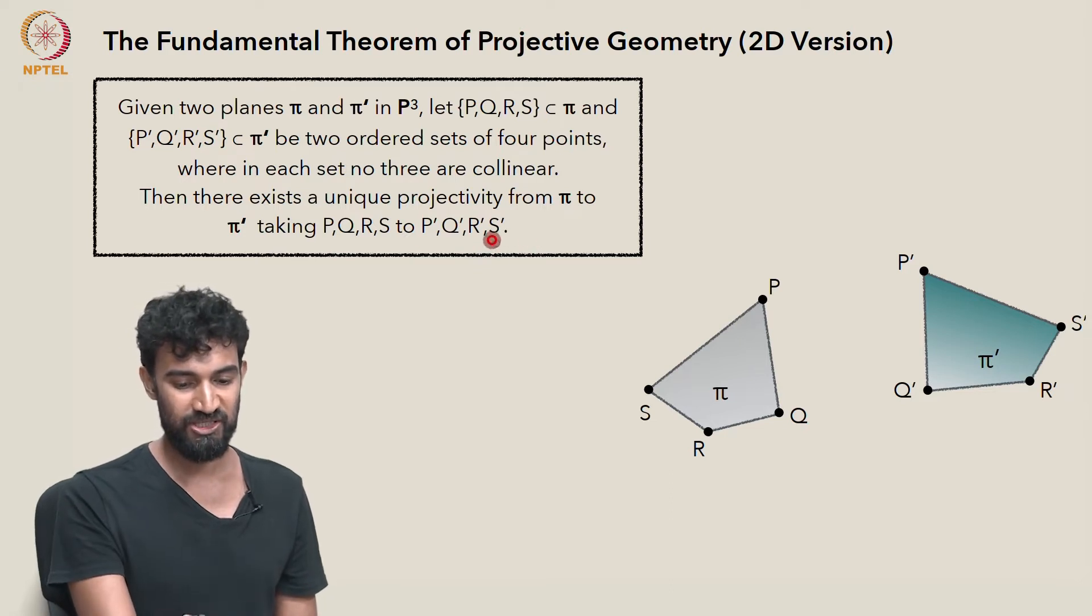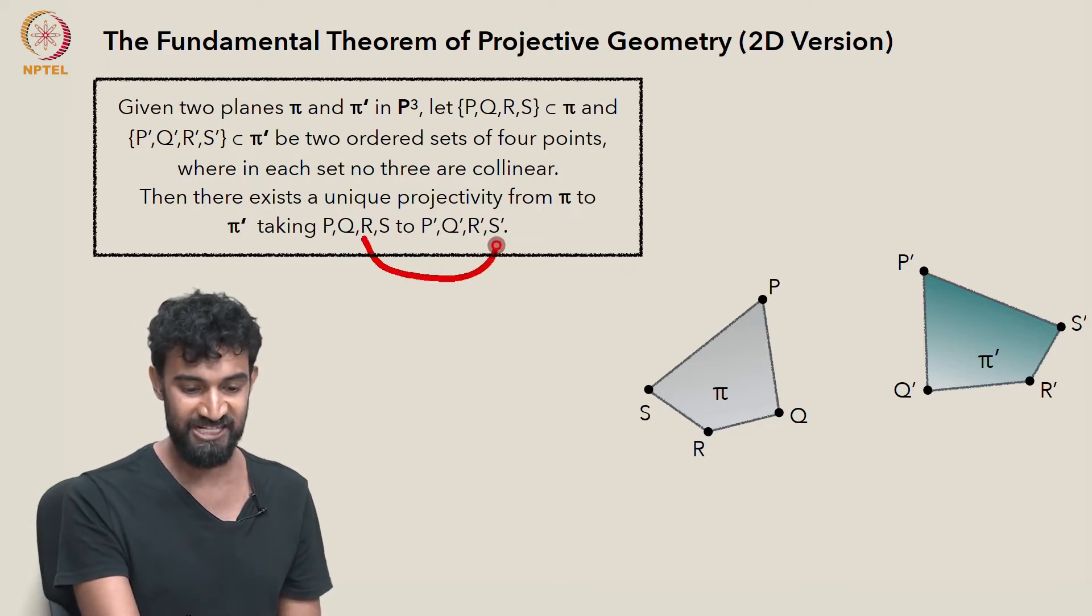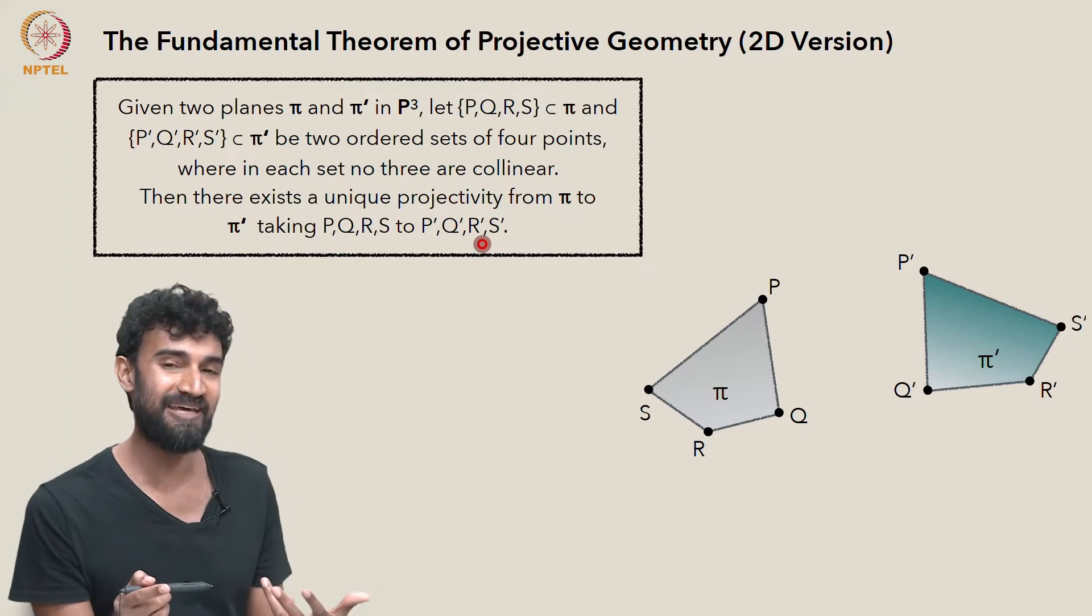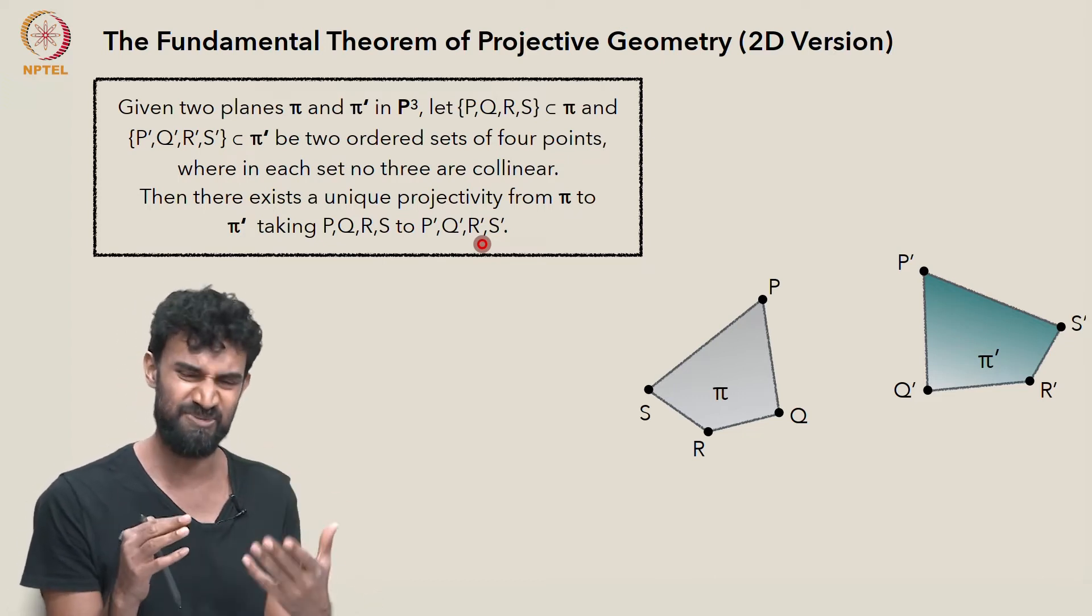If I switched, there'll be one projectivity taking these guys in this order. But if I wanted R to map to S prime and S to map to R prime, I'd also be able to get a projectivity that did that. And that would also be unique.